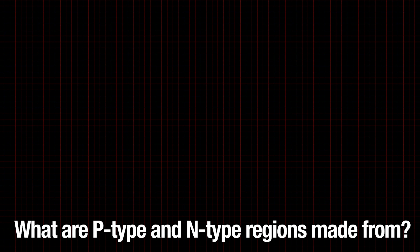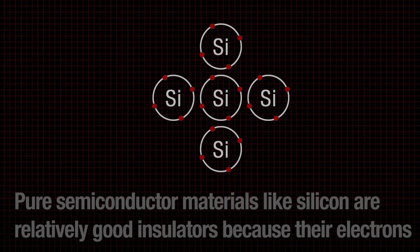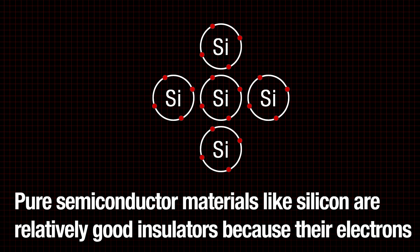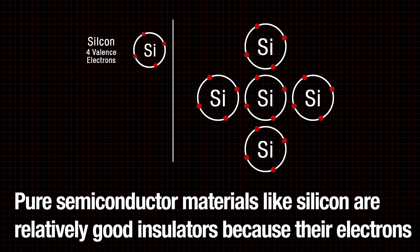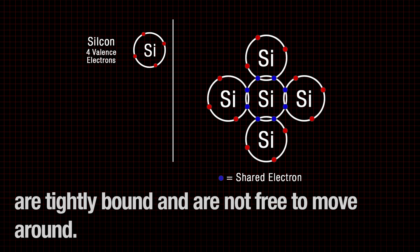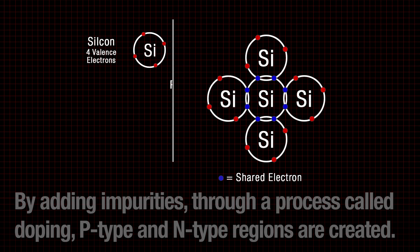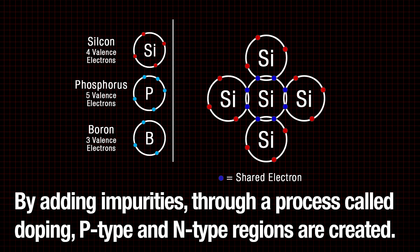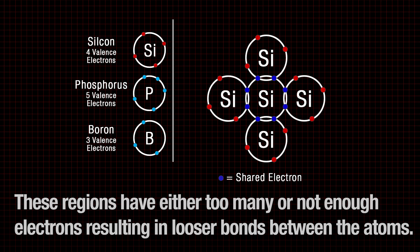But what are p-type and n-type regions made from? Pure semiconductor materials like silicon are relatively good insulators because their electrons are tightly bound and are not free to move around. By adding impurities through a process called doping, p-type and n-type regions are created. These regions either have too many or not enough electrons, resulting in looser bonds between the atoms.